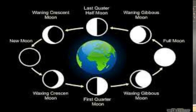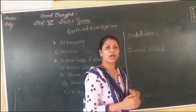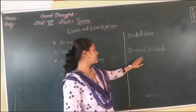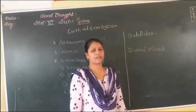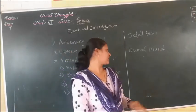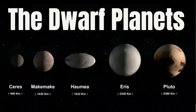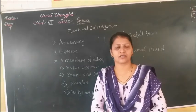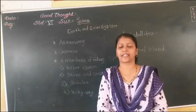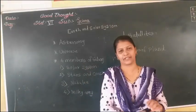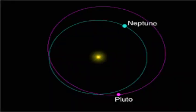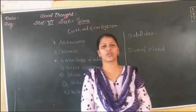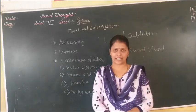There are also artificial satellites, which we will discuss afterwards. Then there are dwarf planets. You might have heard about Pluto. In the last few years Pluto was considered a planet, but it was later declared a dwarf planet. It has its own orbit and its own axis, and it also revolves around the Sun.